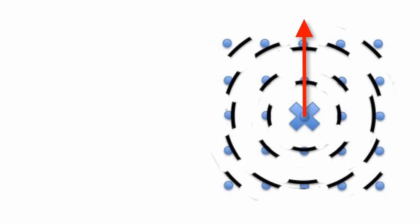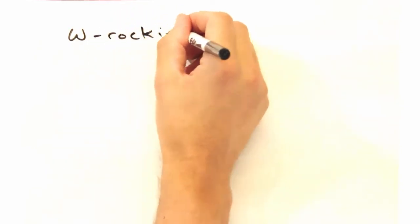Sounds like we need a scan that looks at the short arcs in reciprocal space. Yeah, that's exactly right. And for that we have the omega rocking curve.